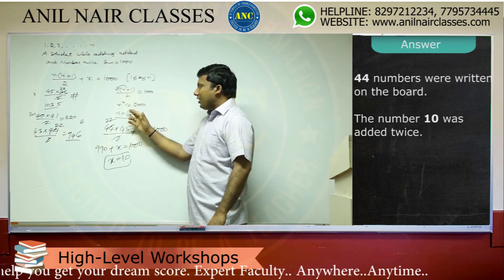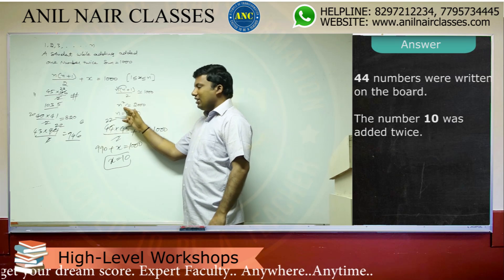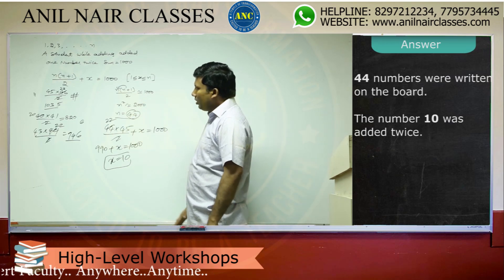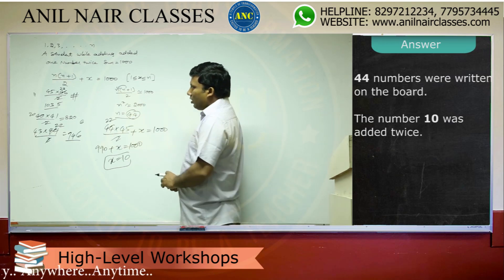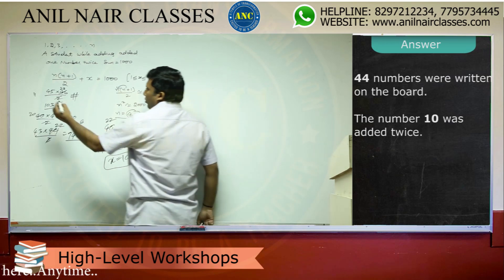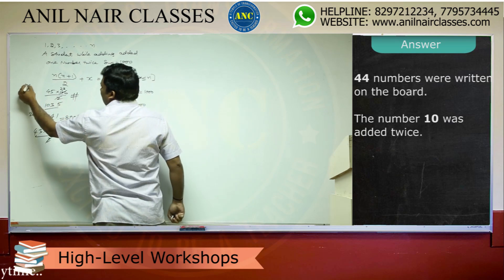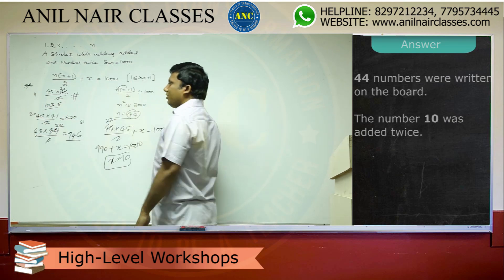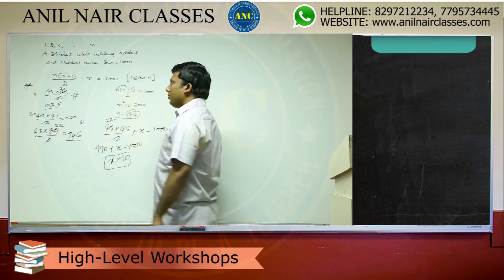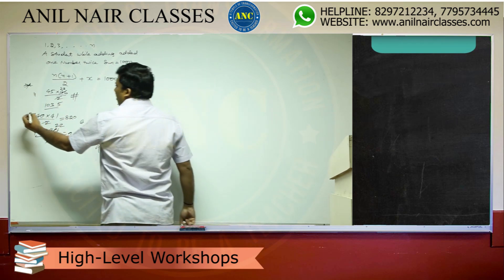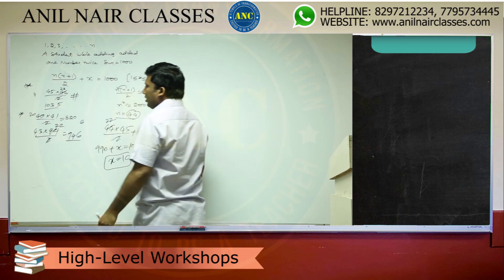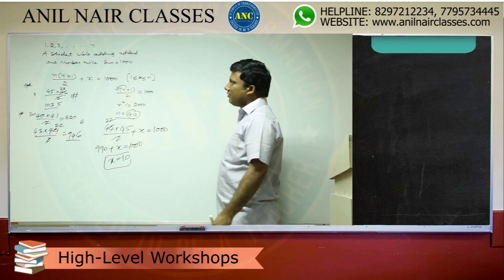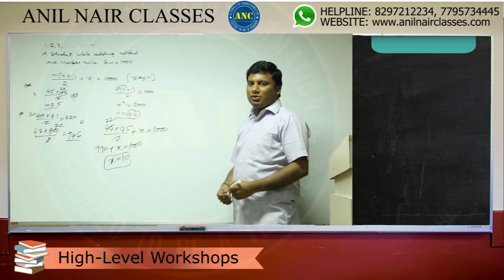The key step is to take the perfect square just less than 2000 to estimate n. These are all the ways to prove that n greater than 44 is not possible and less than 44 is not possible. Try some values yourself to understand why.